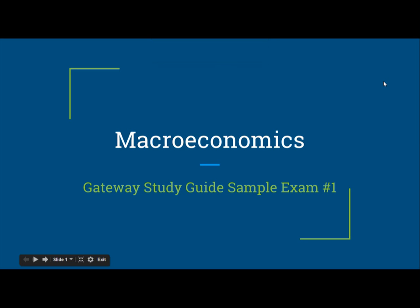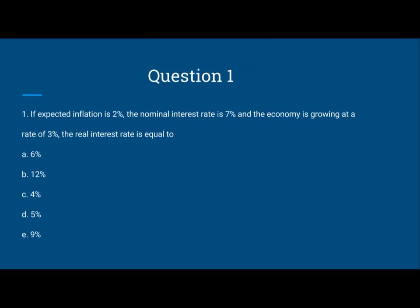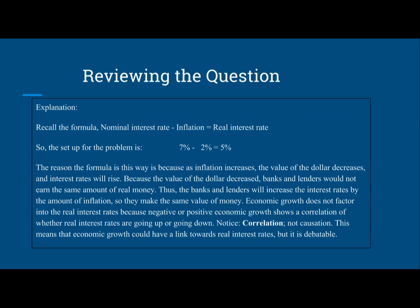Hi guys, today we're going to go over Macroeconomics Gateway Study Guide Sample Exam number 1. Question 1: If expected inflation is 2%, nominal interest rate is 7%, and the economy is growing at a rate of 3%, the real interest rate is equal to A, 6%; B, 12%; C, 4%; D, 5%; or E, 9%. Now, we're going to take a look at the question.